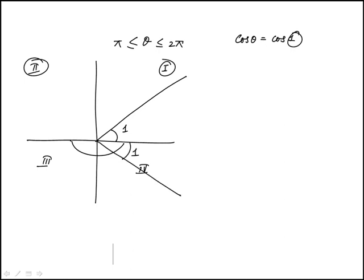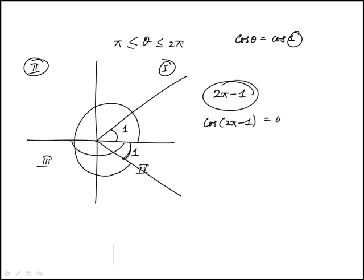And that angle is going to be measured from here. And it's just one off from 2 pi. So the value would be 2 pi minus 1. So cosine of 2 pi minus 1 would be equal to cosine 1.